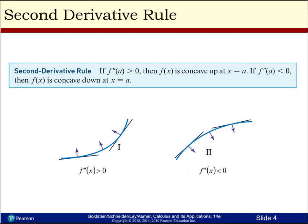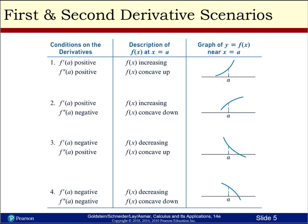The second derivative rule has to do with concave up and concave down. If f double prime of a is greater than zero, meaning the second derivative is greater than zero, then it's concave up at x equal a. If the second derivative is less than zero, then it's concave down at x equal a. We have an example of concave up — that's a bowl sitting on a table, the right-hand side of the bowl — and a bowl sitting upside down on a table, which is concave down.